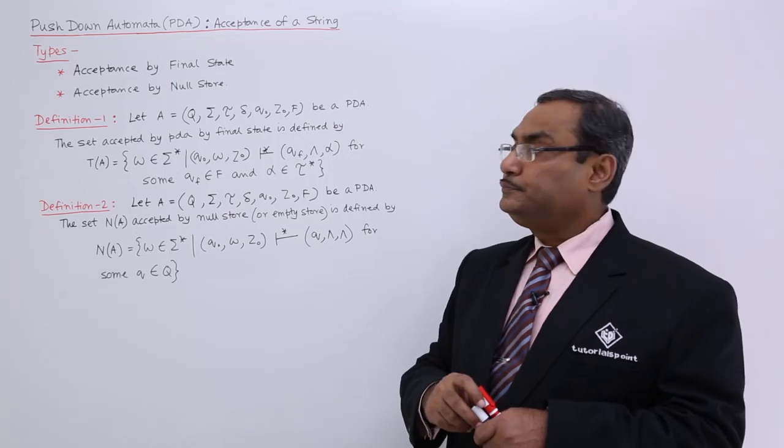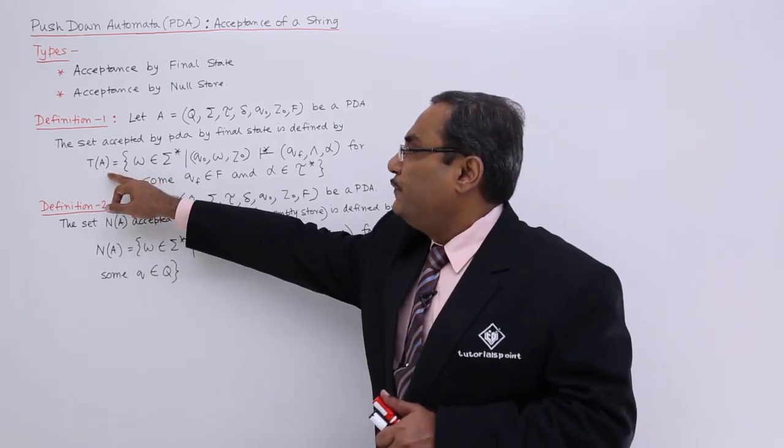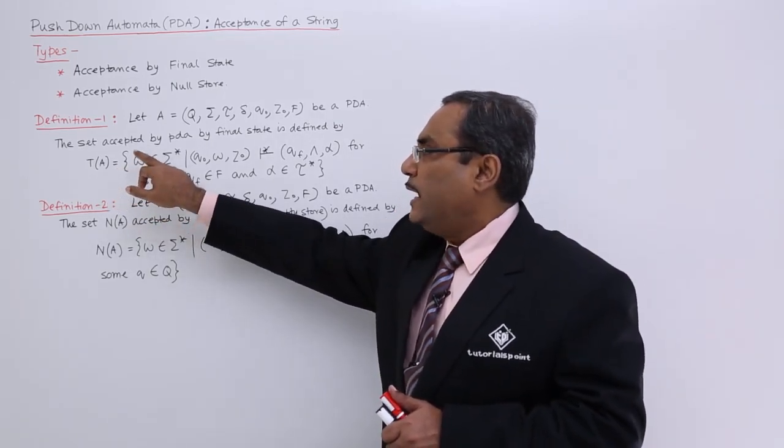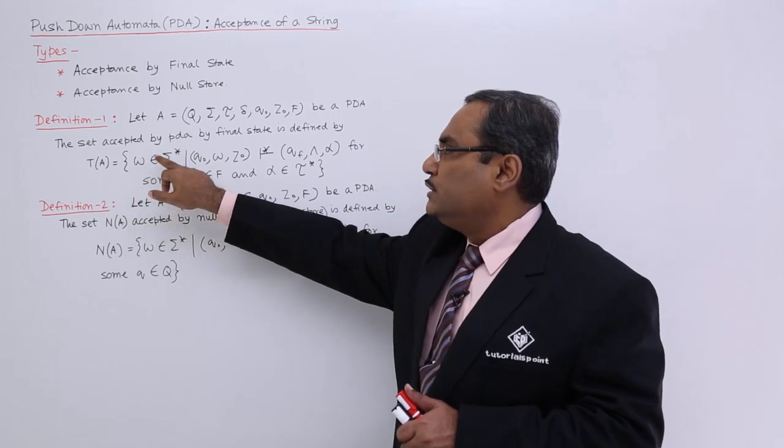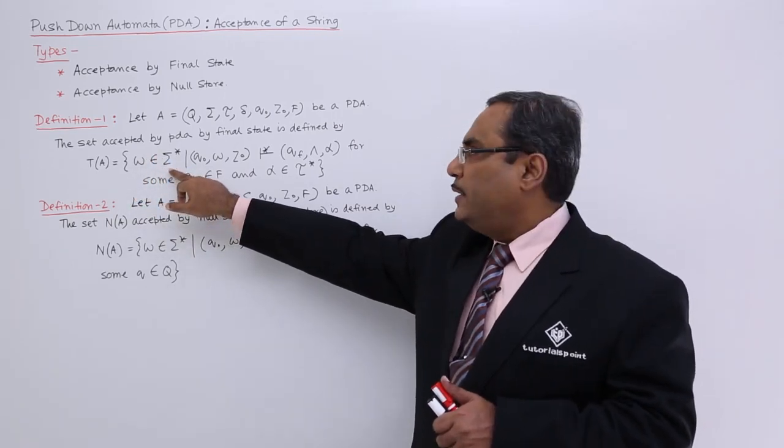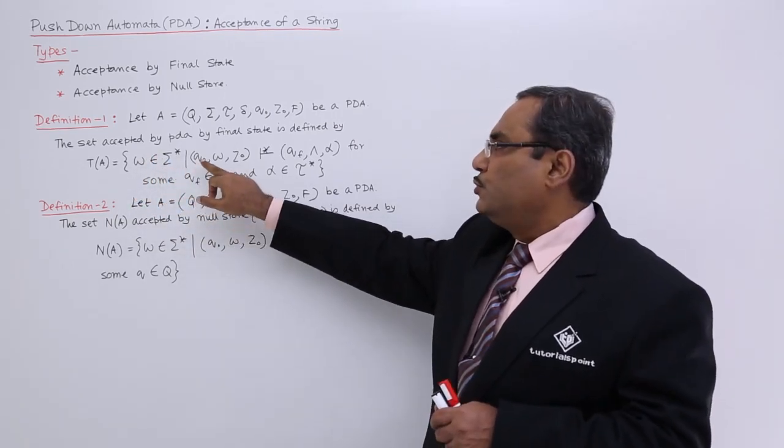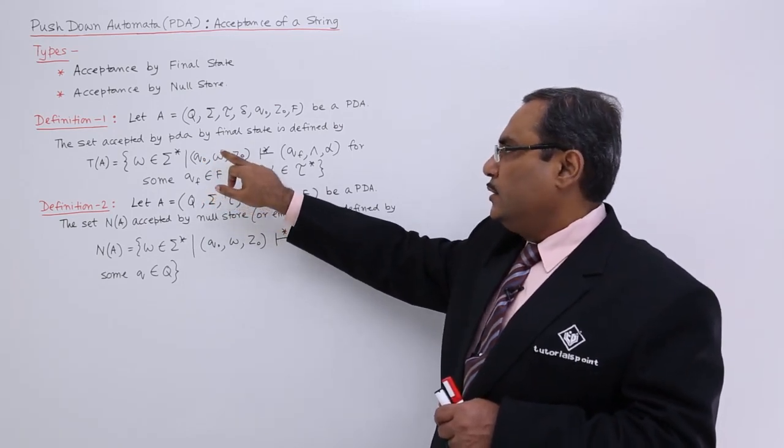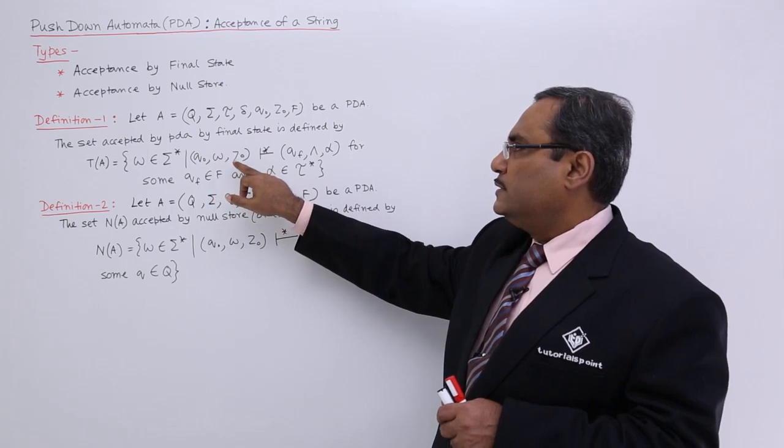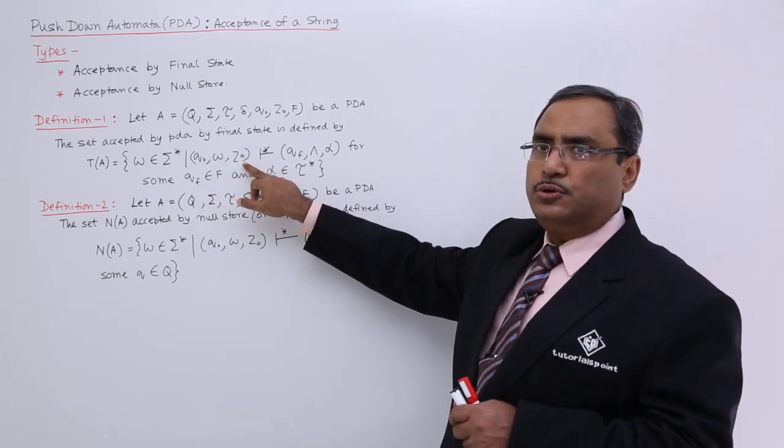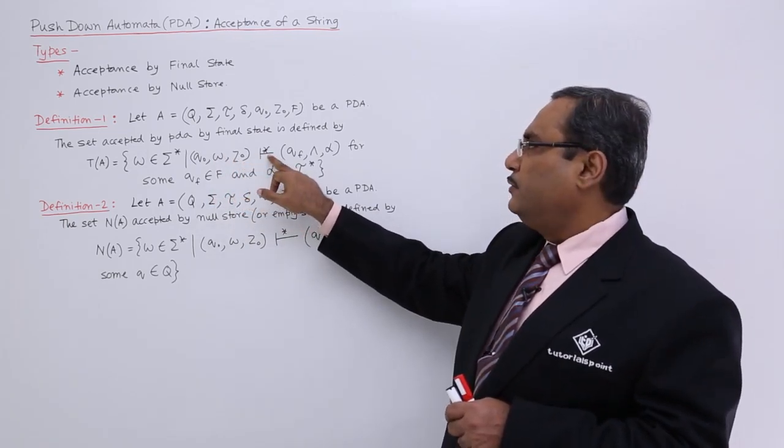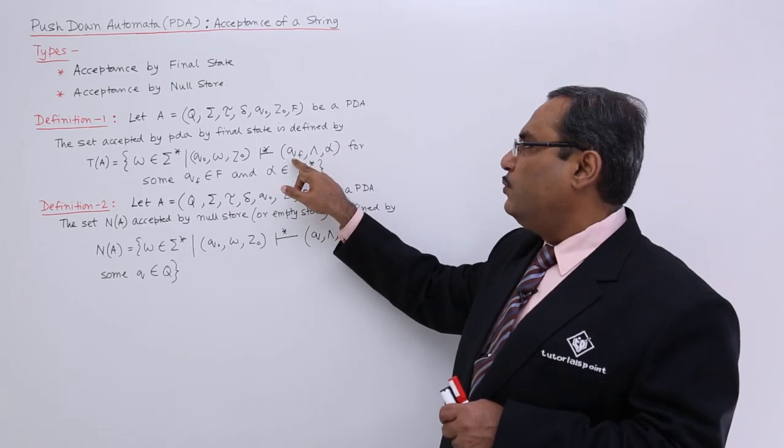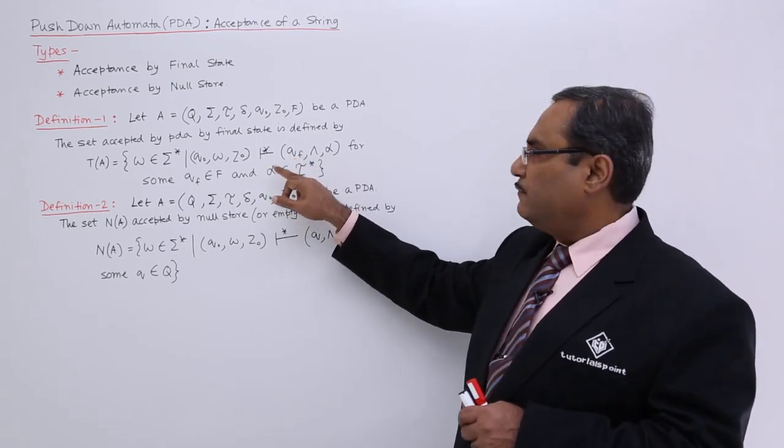T(A) equals W, where W is the collection of input alphabets to be accepted. Initial state Q₀, W is the string to be parsed or tested whether it is getting accepted. Z₀ is the pushdown store top symbol. After multiple transitions, we have QF, reaching to the final state. Kappa means the input string has been read and exhausted.